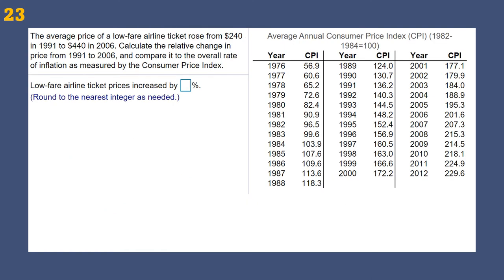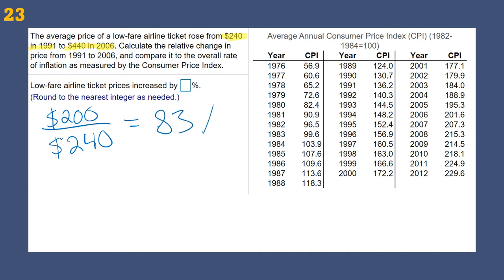The average price of a low-fare airline ticket rose from $240 in 1991 to $440 in 2006. Calculating the relative change: the increase is $440 minus $240 equals $200. Then divide by the original price of $240. Typing that in gives us about 83% increase.